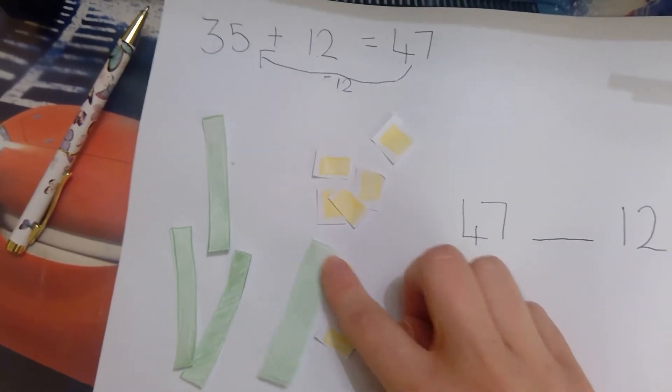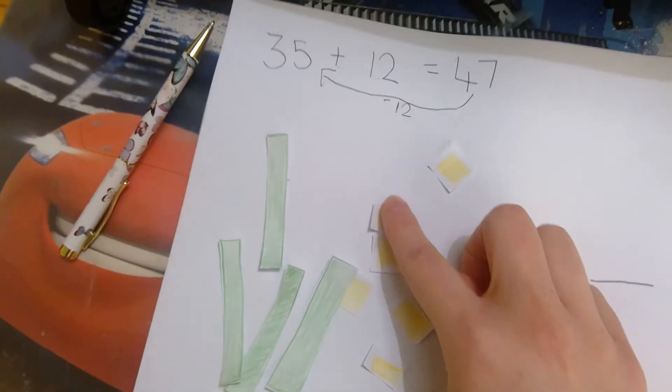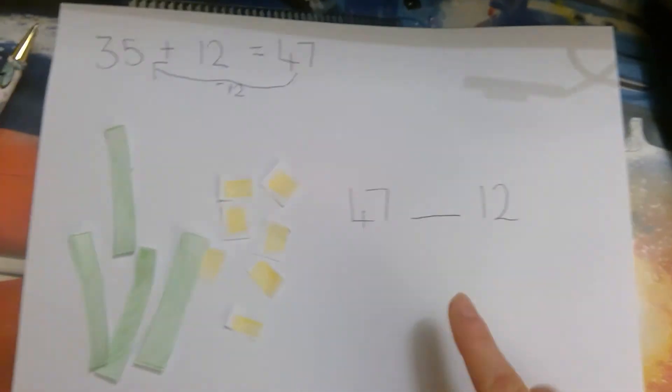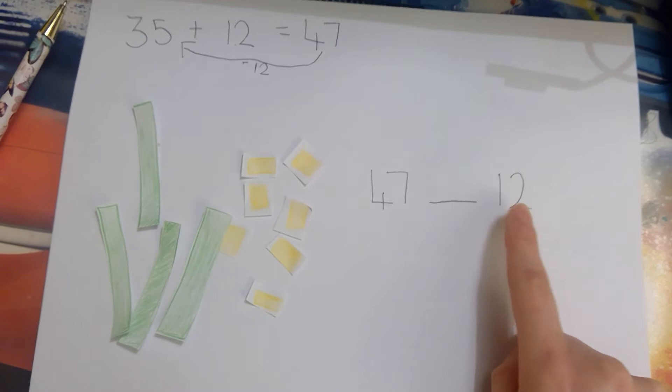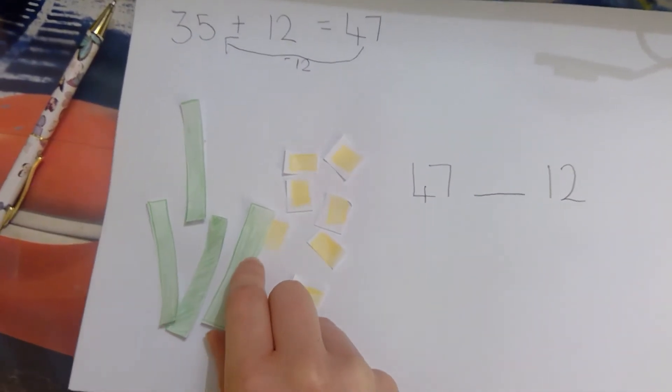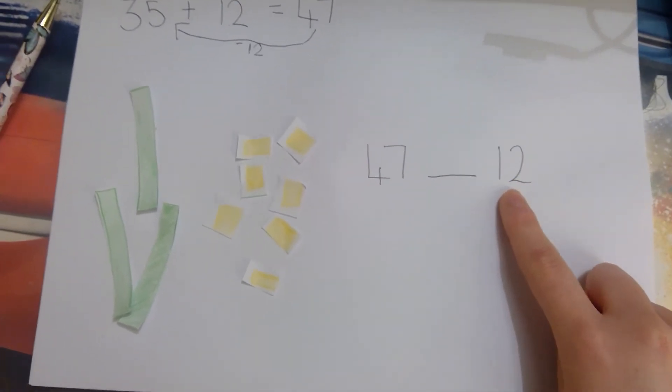1, 2, 3, 4, 5, 6, 7. Now I'm going to take away 12. Take away 1 tens, take away 2 ones.